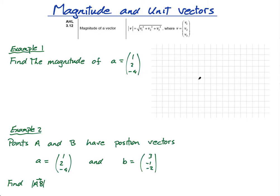Let's just go back to vectors in 2D. Imagine I have the vector — let's go 5, 3, something like that. So this is the vector (5, 3). We've gone along 5 and up 3. What is the magnitude of this vector?